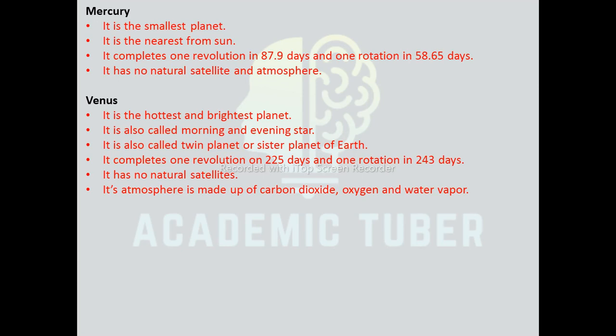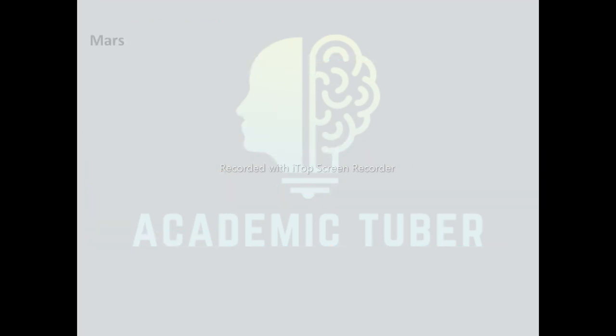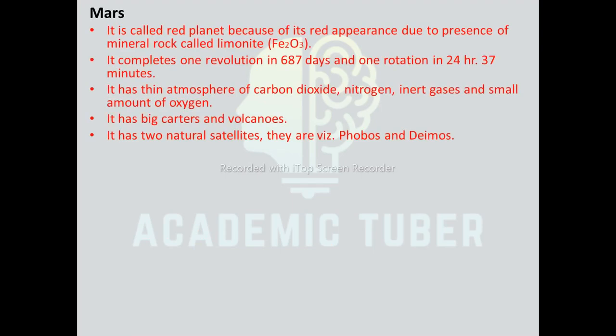Earth: it is also called the home planet and is a living planet because it has plenty of water, essential gases, and suitable temperature. It accomplishes one revolution in 365.25 days and one rotation in 23 hours 56 minutes. Its atmosphere is rich in nitrogen and oxygen, which also contain carbon dioxide, inert gases, and water vapor. It has one natural satellite — the Moon.